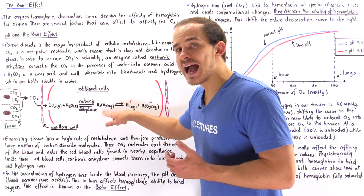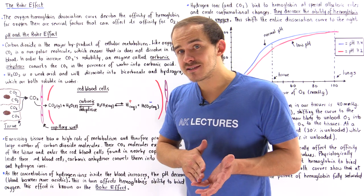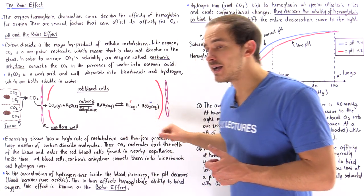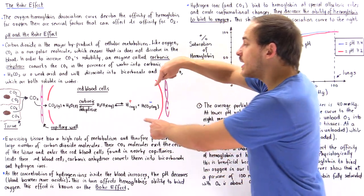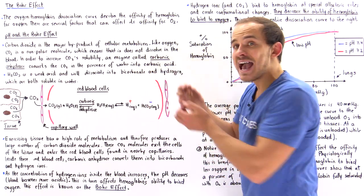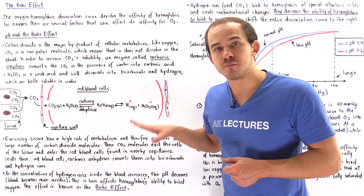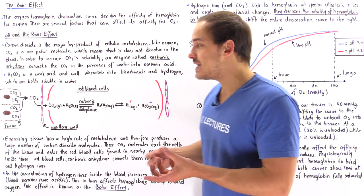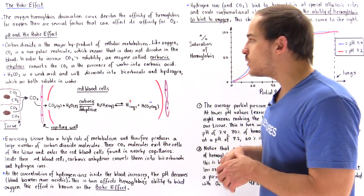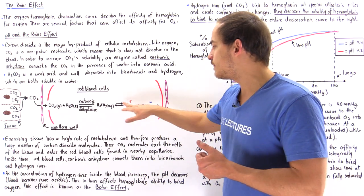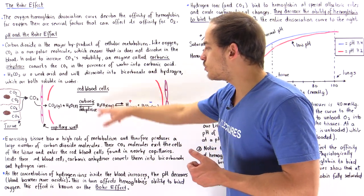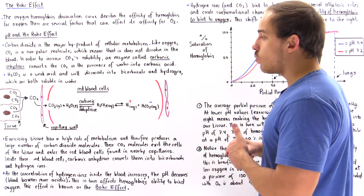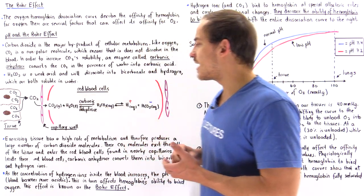Because carbonic acid is a weak acid, it dissociates into an H+ ion and a bicarbonate ion. Because these two ions have a charge, they are soluble in our blood plasma. So inside our body, we store carbon dioxide in this ionic form because H+ and bicarbonate are soluble in water, while carbon dioxide itself is not.